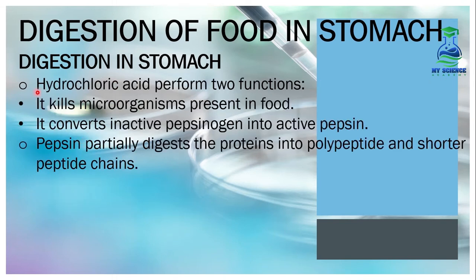Hydrochloric acid performs two functions: number one, it kills the microorganisms present in the food; number two, it converts inactive pepsinogen into the active enzyme pepsin. This pepsin enzyme then partially digests proteins into polypeptide and shorter peptide chains.